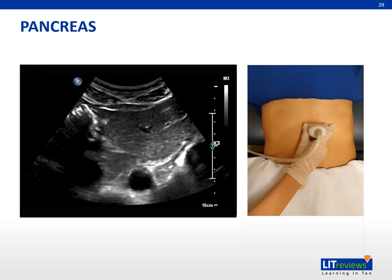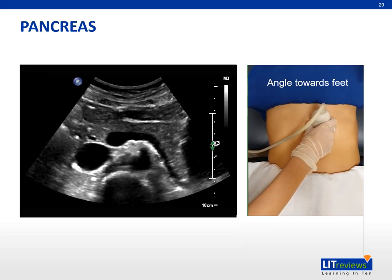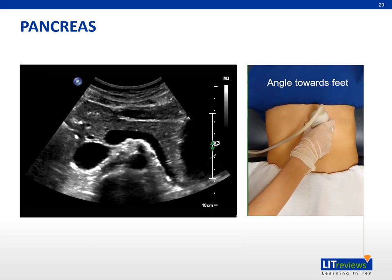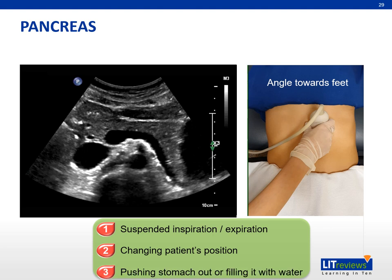To image the pancreas, place the transducer in the transverse position at the mid-epigastrum and slide or fan the transducer caudally until the pancreas is visualized. Scanning during suspended inspiration or expiration, and changing the patient's position to right decubitus or erect, can optimize the views. Asking the patient to push the stomach out or giving water to fill the stomach are also ways to better visualize the pancreas.